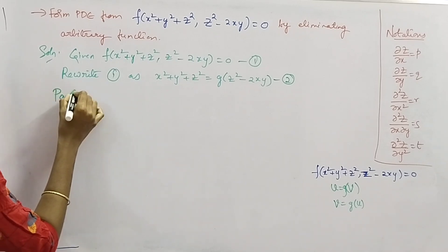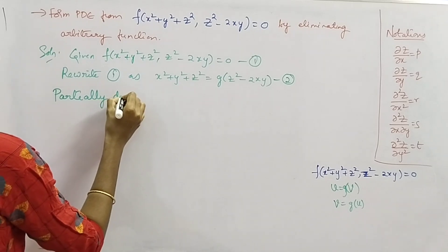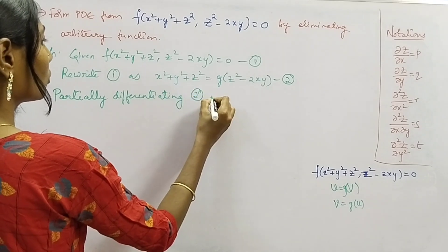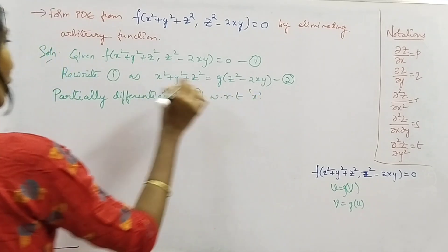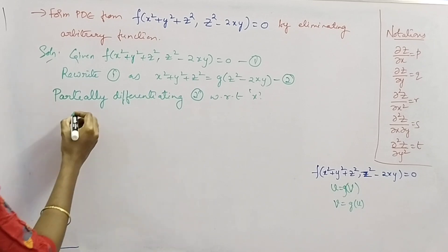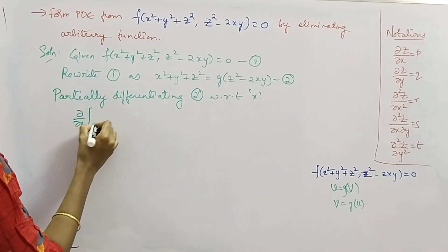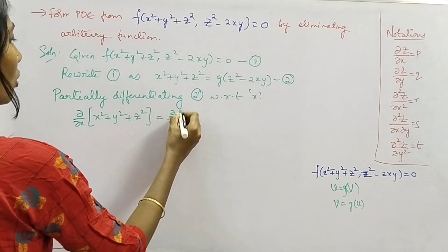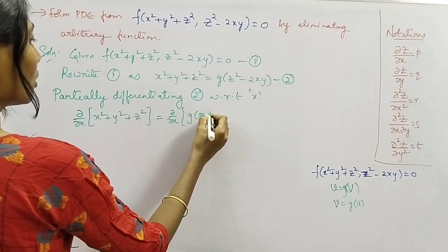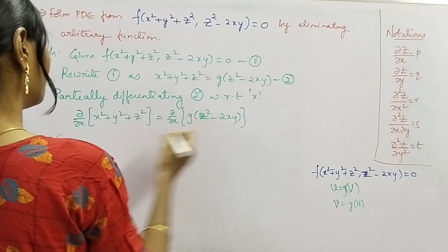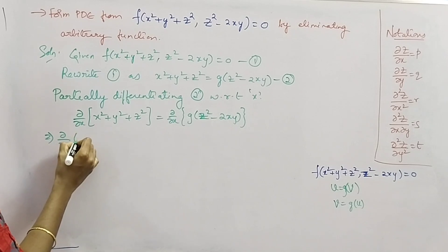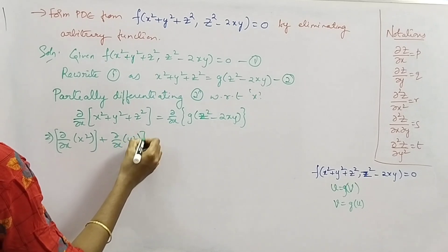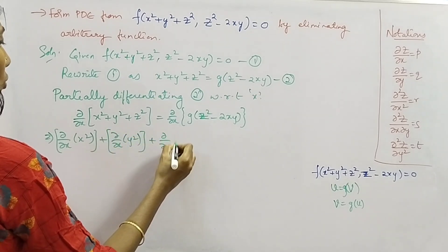Partially differentiating equation 2 with respect to x: apply ∂/∂x on both sides of equation 2 to avoid mistakes. The left-hand side gives ∂/∂x(x²) + ∂/∂x(y²) + ∂/∂x(z²), and the right-hand side gives ∂/∂x of g(z² − 2xy).